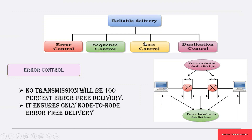Reliable delivery is divided into four controls: error control, sequence control, loss control, and duplication control. When a packet is transmitted from a source to a destination, there should be no errors — no loss of packets during transmission. While we aim for error-free delivery, we cannot assure that there will be 100% error-free delivery between the source and destination at all times.